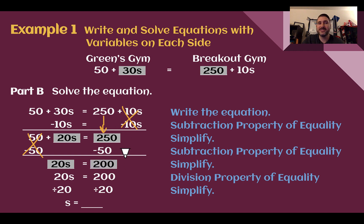Essentially what we just did there was we found the difference in the initial fees. So Breakout gym cost $200 more in initial fees, but Green's gym cost $20 more per session. So we need to know when those two balance each other out. So 20 sessions has to be equal to 200. We're going to divide now by 20 to figure out how many sessions that will be.